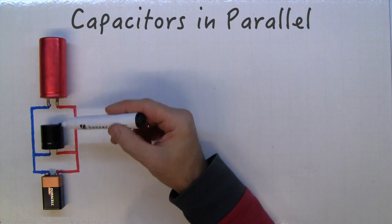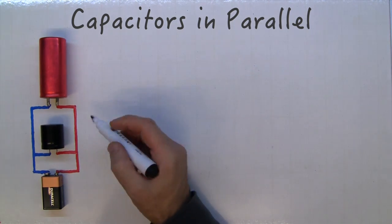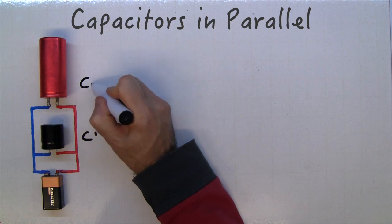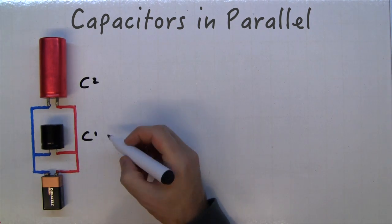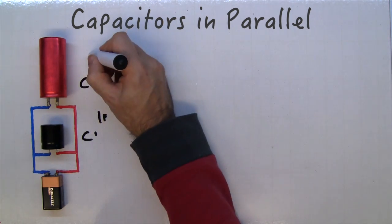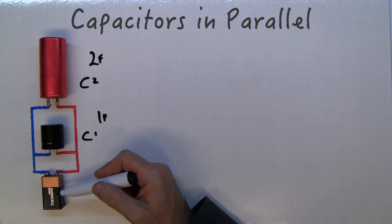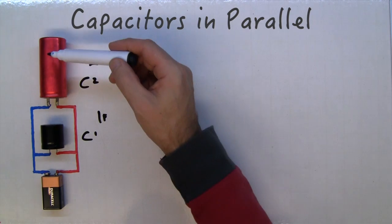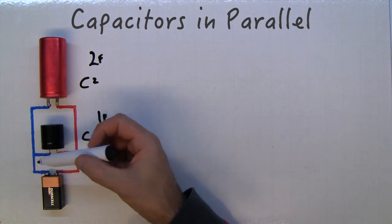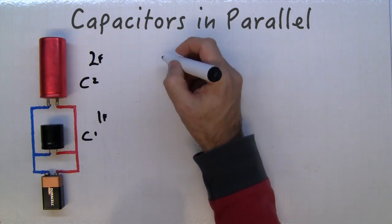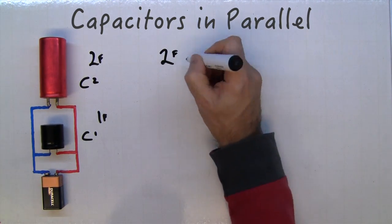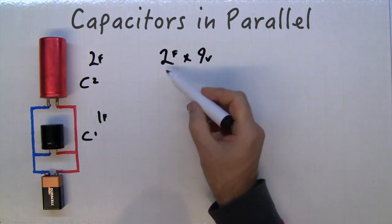If you put capacitors in parallel, let's say this is capacitor one and capacitor two. To make the calculation simple, we'll say this is one farad and this is two farads. The voltage across these are both going to be nine volts because they're wired in parallel. If we have two farads, you times that by the nine volts, so two times nine equals 18 coulombs.